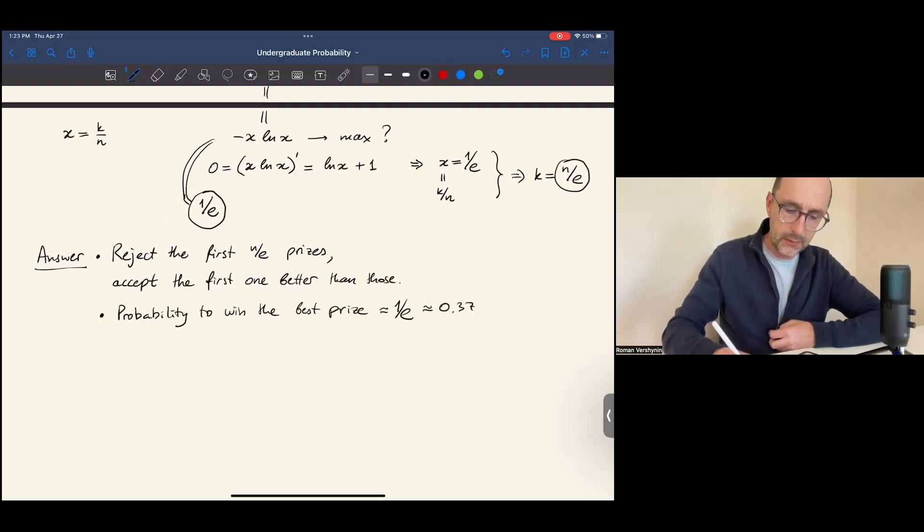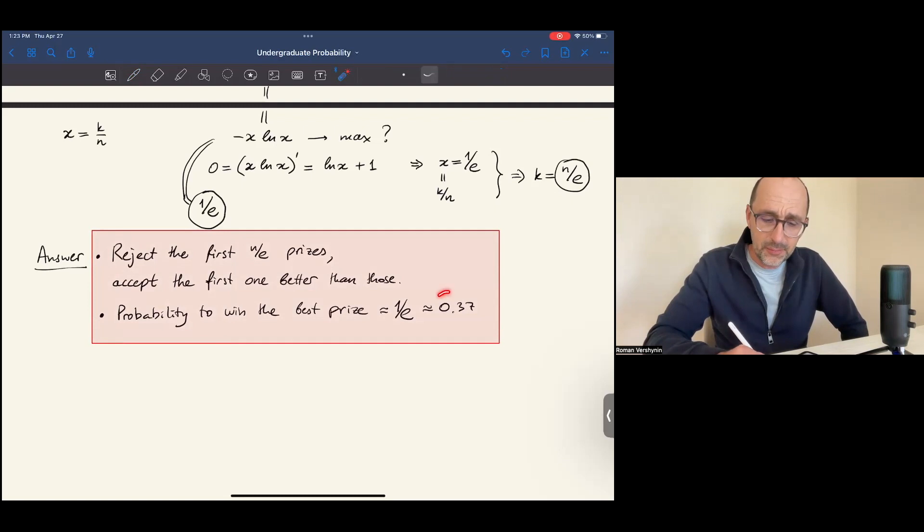Or 0.37. This is very surprising. No matter how many prizes - hundreds, thousands, millions, billions - our strategy will allow us to win the best prize with constant probability, 37%.